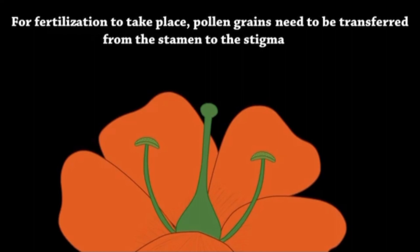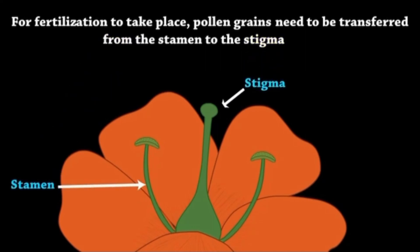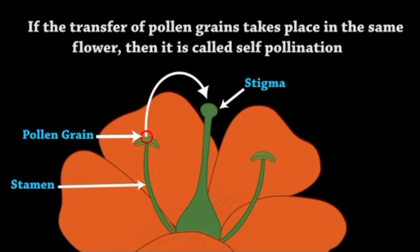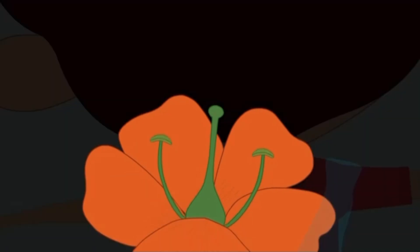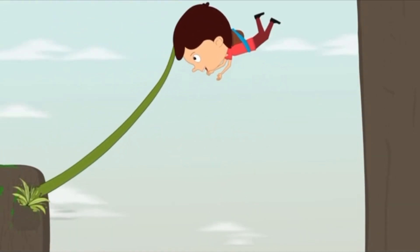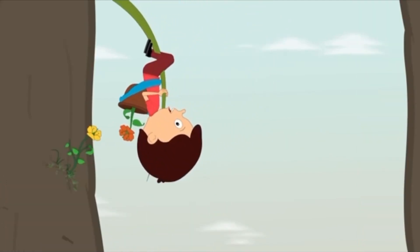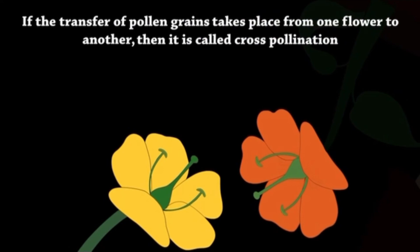For fertilization to take place, pollen grains need to be transferred from the stamen to the stigma. If the transfer of pollen grains takes place in the same flower, then it is called self-pollination. If the transfer of pollen grains takes place from one flower to another, then it is called cross-pollination.